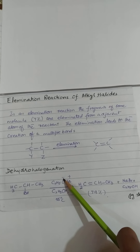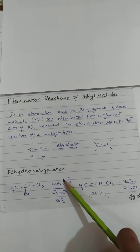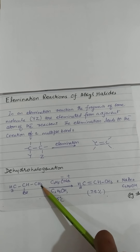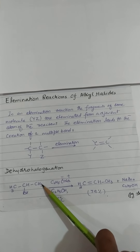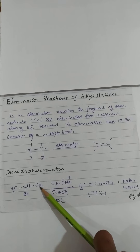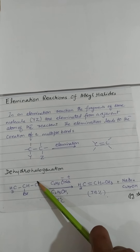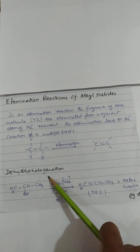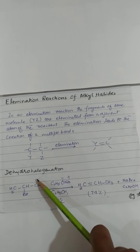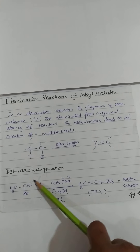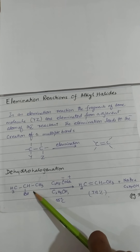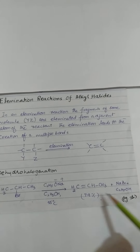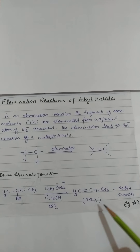یہاں سے oxygen جو ہے اپنے negative part سے اس یہاں کے proton کو abstract کرے گا۔ After abstraction of proton، یہ bond shift ہو جائے گا اور یہاں سے leaving group جو ہے وہ eliminate ہو جائے گا۔